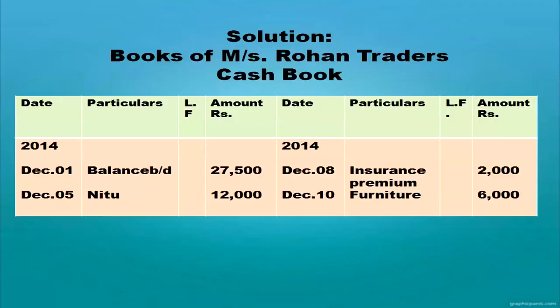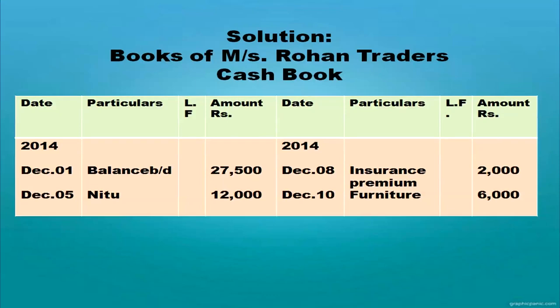Opening balance is recorded with date and amount in the respective columns. Cash received from Neetu — 'To Neetu' on the debit side with date and amount. Insurance premium paid is an expense, so it is posted on the credit side with date and amount. Furniture purchased is also a payment — furniture debit to cash — so it is written on the credit side of the cash book as 'By Furniture' with date and amount.